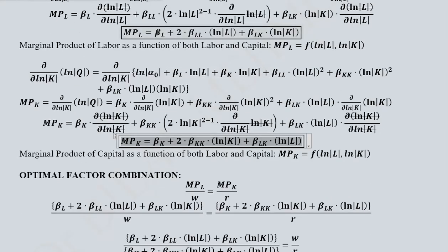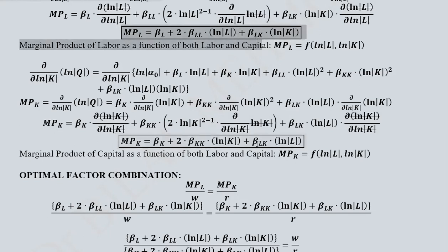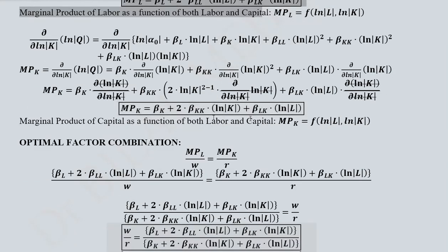There is quite a bit of symmetry between the two results. In MPL, we have a parameter without any variable, then 2 times the coefficient with subscript LL for the squared labour term, and the cross-term coefficient beta-LK appearing with natural log of capital. In MPK, similarly we have the constant parameter, 2 times the coefficient with subscript KK, and the same beta-LK appearing with natural log of labour. MPK is therefore not only dependent upon natural log of capital, but also on the natural log of labour.